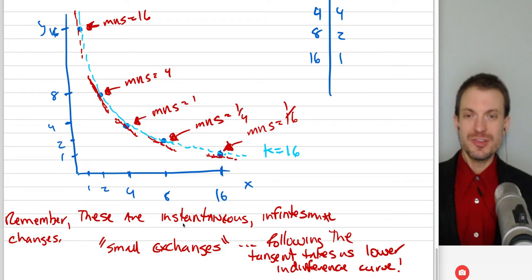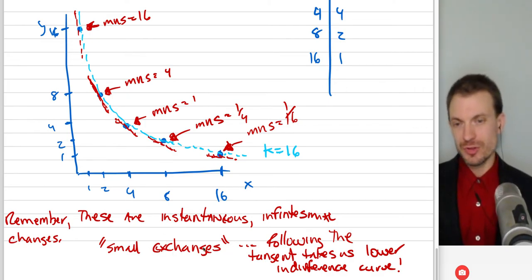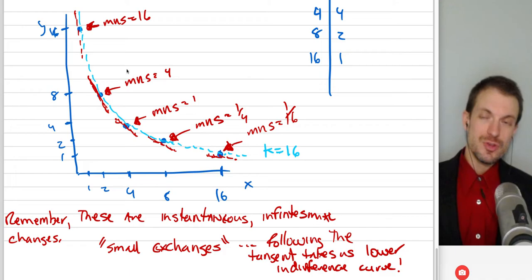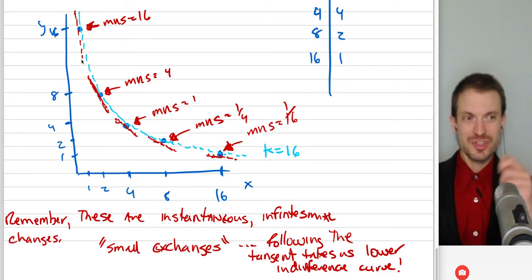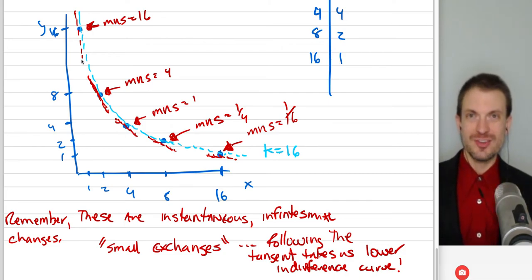Now, my comment is, remember, these are small, instantaneous, infinitesimal changes. Small exchanges. From the statement of the question, statement of the exercise, it was small changes. Matter of fact, if you were to actually follow the line tangent to the curve, that would take you to a lower indifference curve immediately. Like, this is the line, this is the tangent line, the line tangent to the curve. Imagine if you have a weight at the end of a string and you're spinning it around, and then you let it go. It's going to fly off on a tangent and immediately lose or leave the loop you're spinning it on. Think of basic projectile motion.